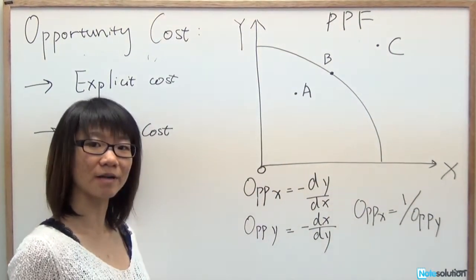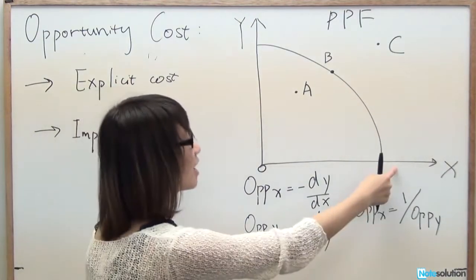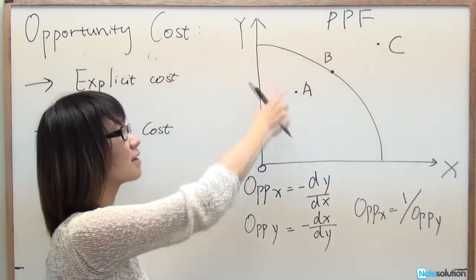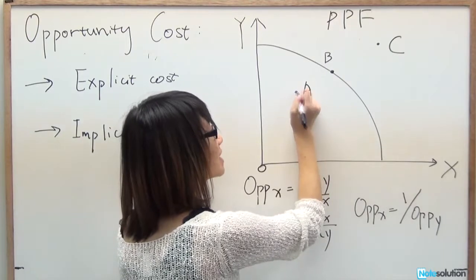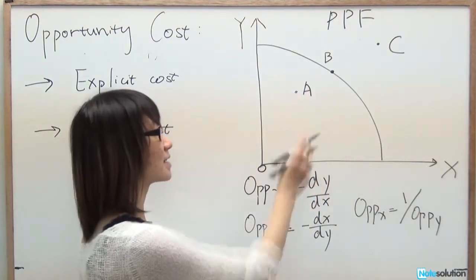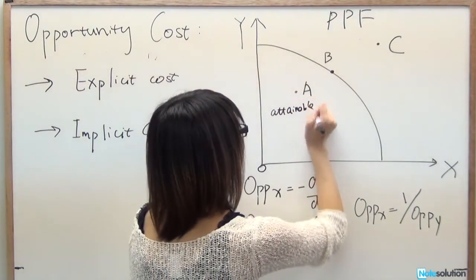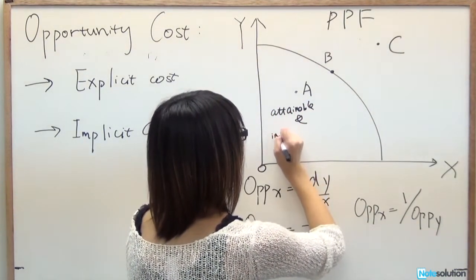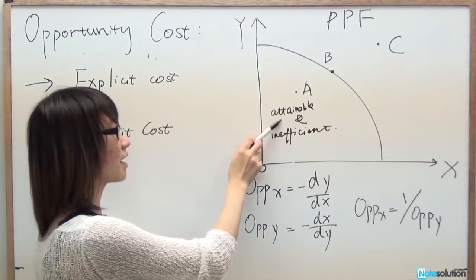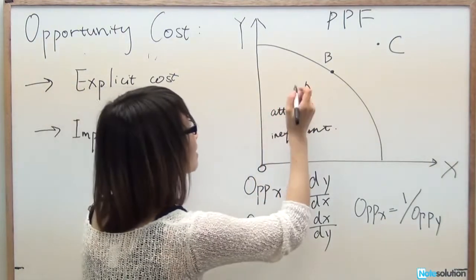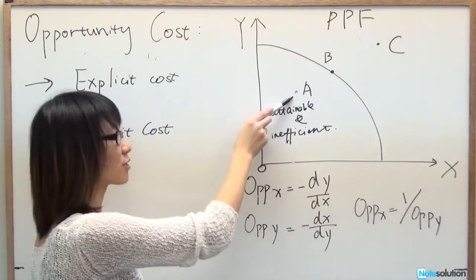For example, if you have limited labor, you can only consume a limited amount of X or a limited amount of Y. There are three areas on the PPF line. A point inside the PPF line, such as point A, is attainable but not efficient.